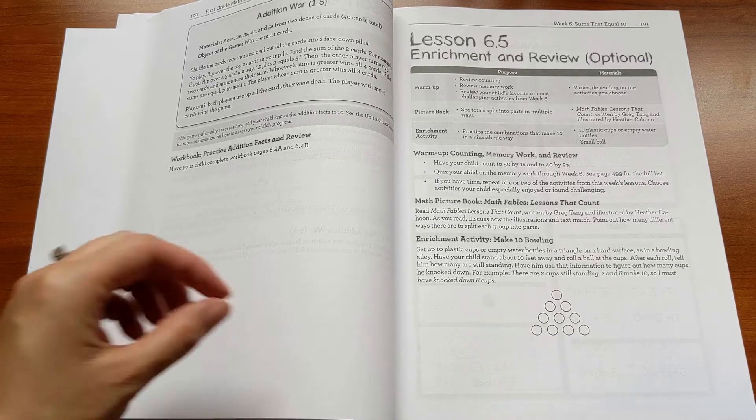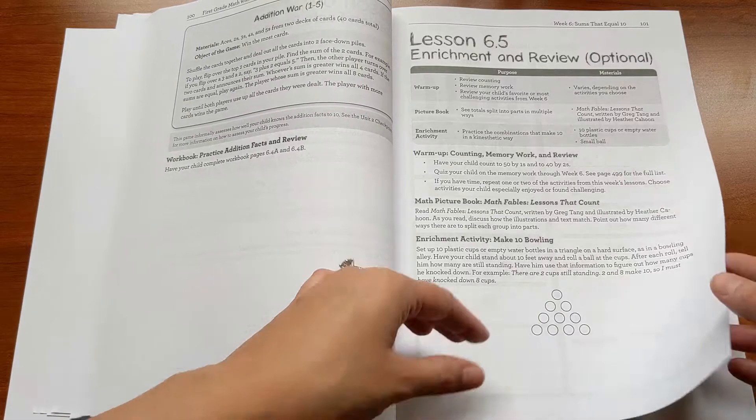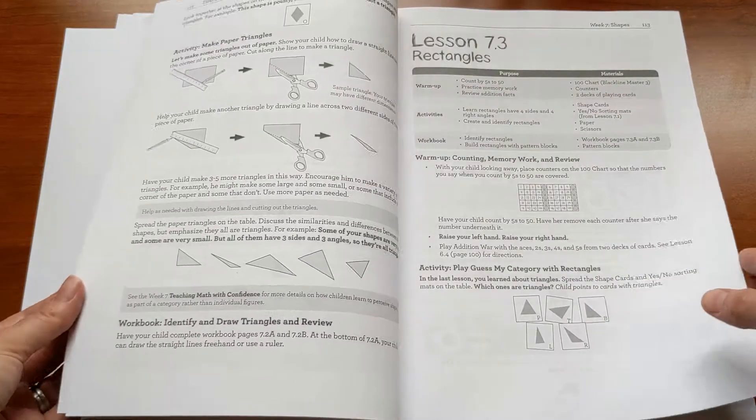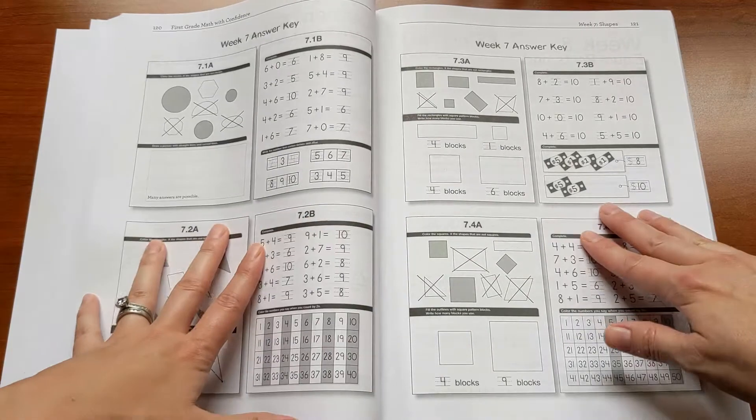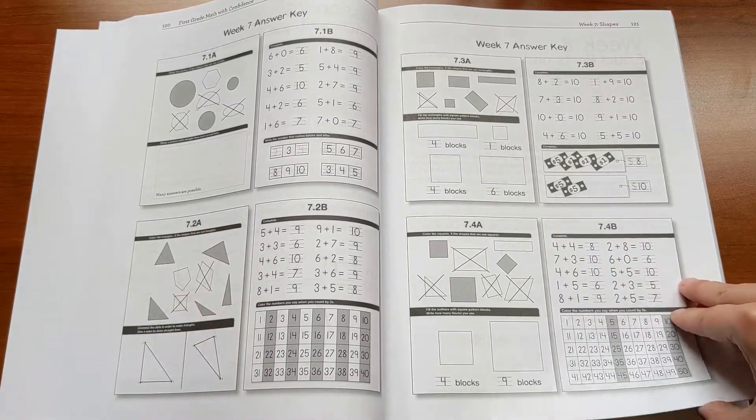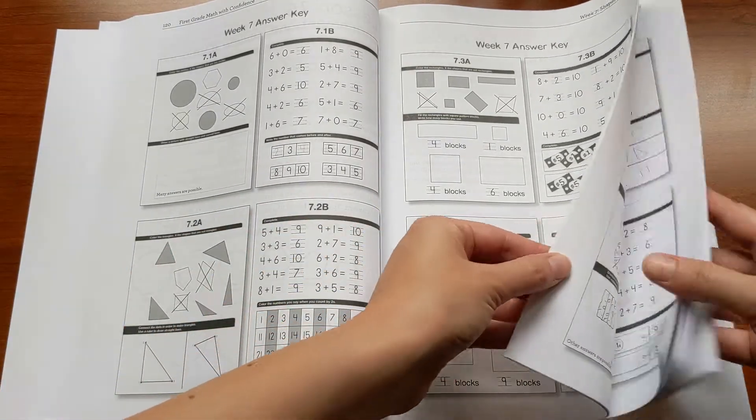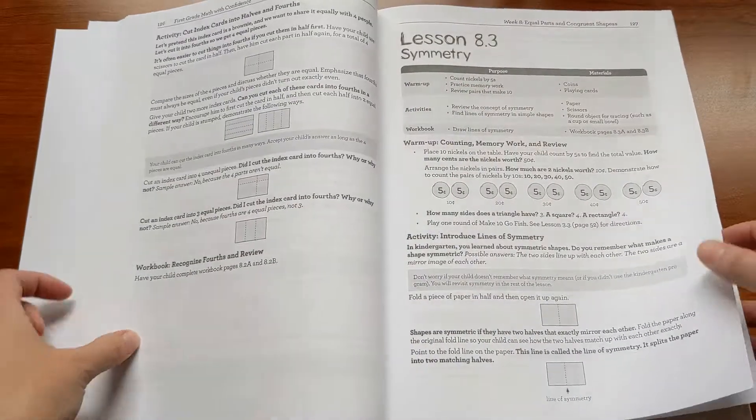So there's a big variety here. Some of them are suggestions for little simple field trips. Some of them are art projects. There's a wide variety. There's also an answer key at the end of every week for the workbook, which you'll see in a second. But this just makes it easier to check your kids' work.